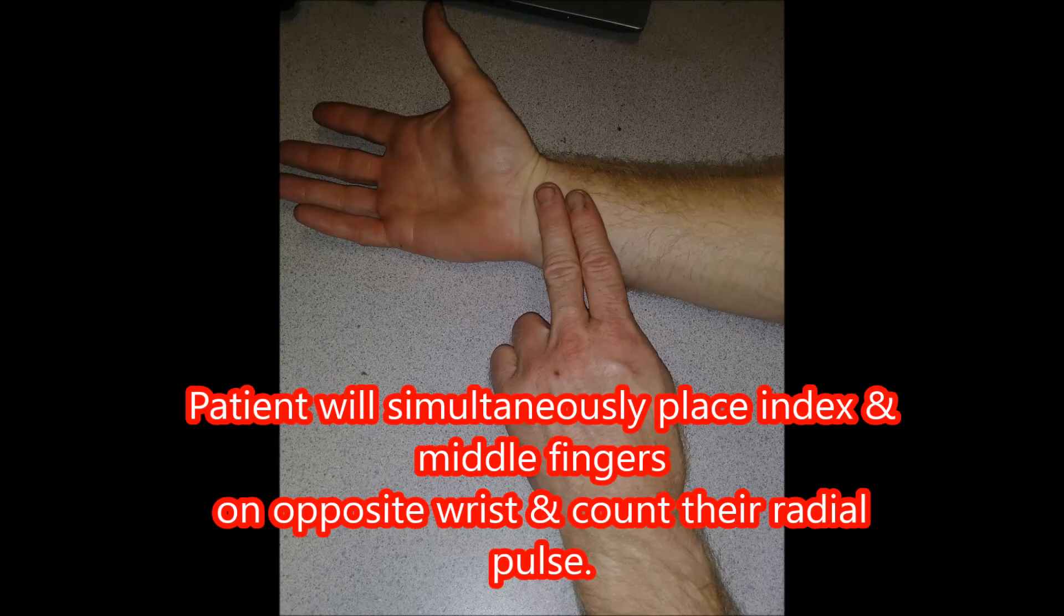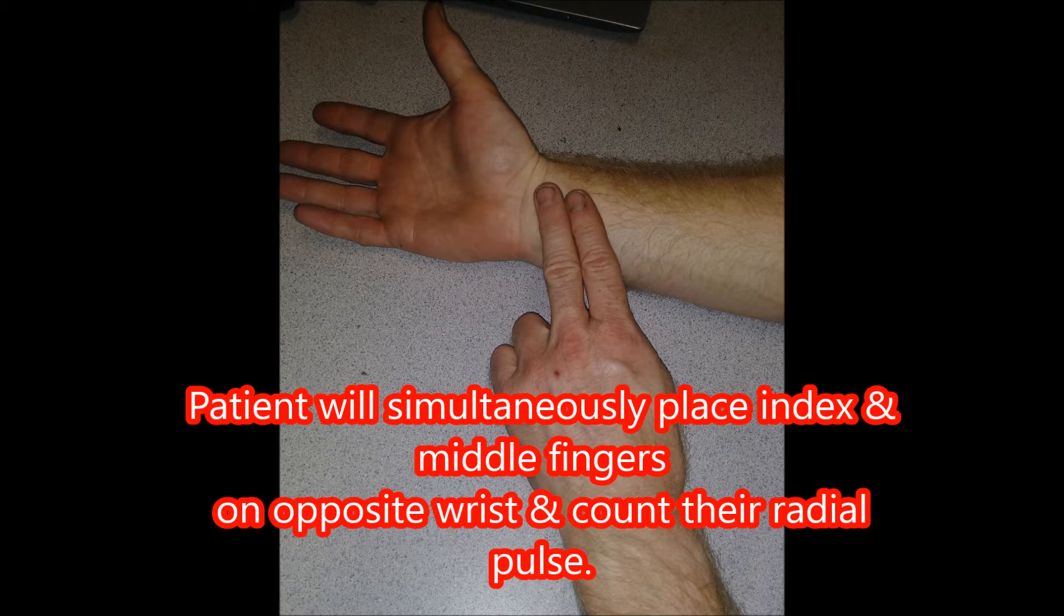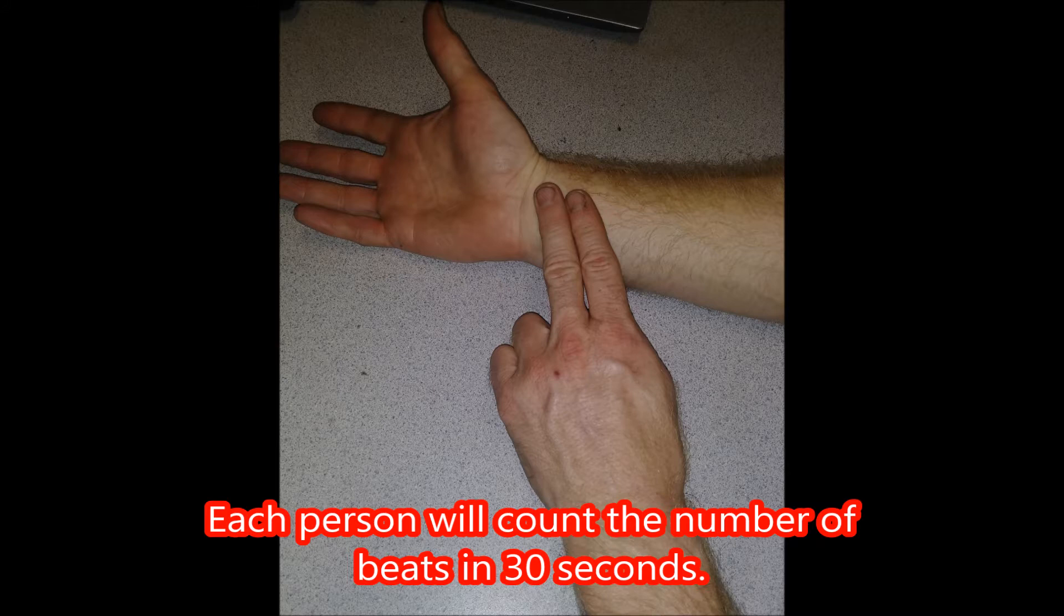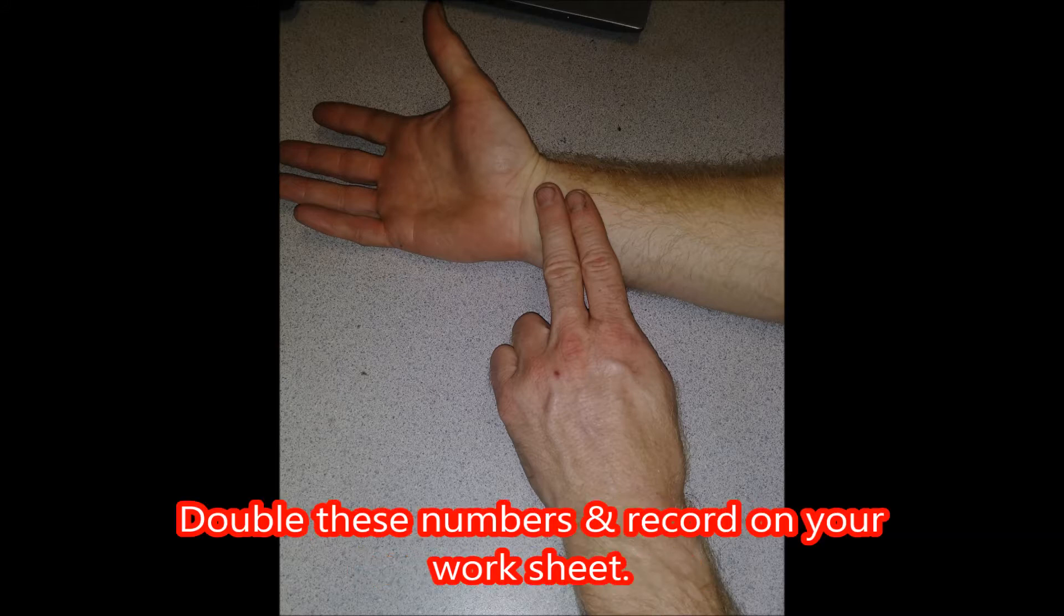The patient will simultaneously place index and middle fingers on opposite wrist and count their radial pulse. Each person will count the number of beats in 30 seconds. Double these numbers and record on your worksheet.